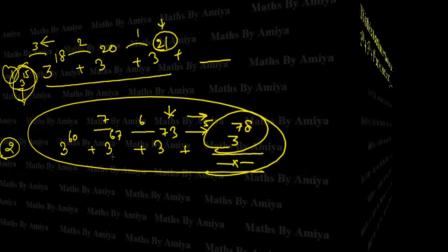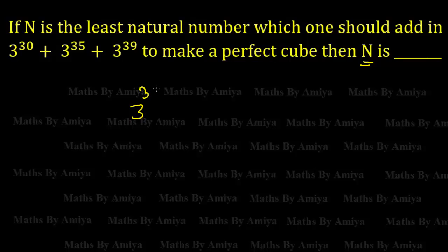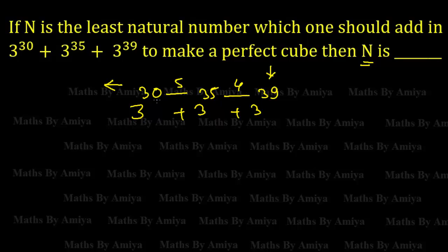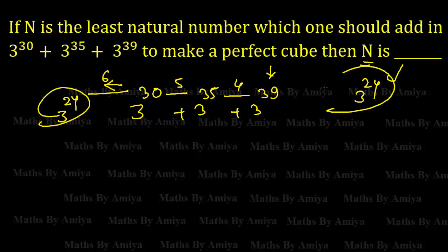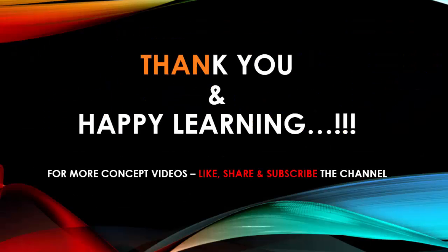Now our original question: 3^30 + 3^35 + 3^39. We need to make a perfect cube by adding the least number. The largest power is 39, which is divisible by 3, so we work backward. The gap is 5, then 4, so the previous gap should be 6. With gap of 6 from 30, we get 3^24. So our answer is 3^24 is the least number. If you have any doubt, feel free to ping me on this video thread or on Facebook. Thank you and happy learning.